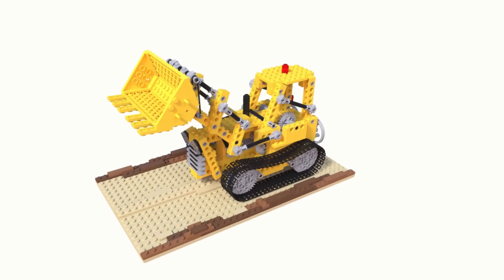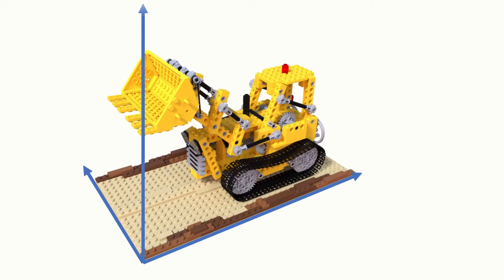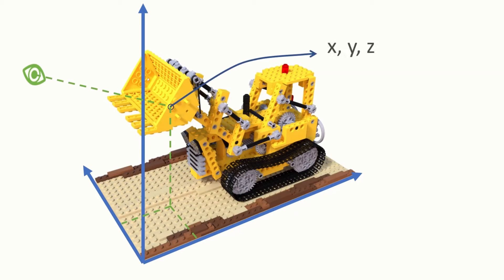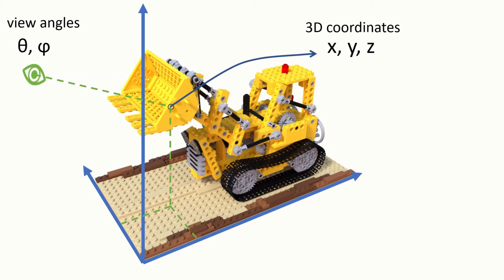So can you imagine we can actually represent a 3D scene with a neural network? Of course we can. Assume we have a 3D object here. We define a coordinate system — X, Y, Z — and we pick a point in the scene in 3D. We have the coordinate of it, and we decide on the view direction where we look at it, determined by theta and phi.